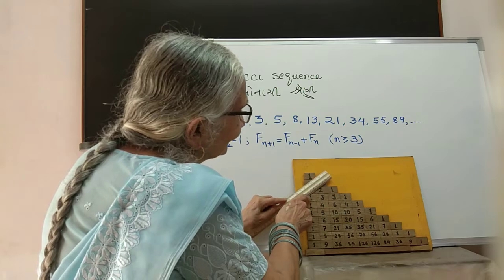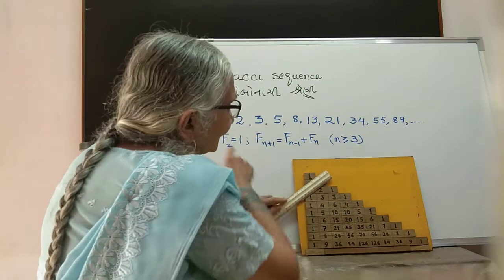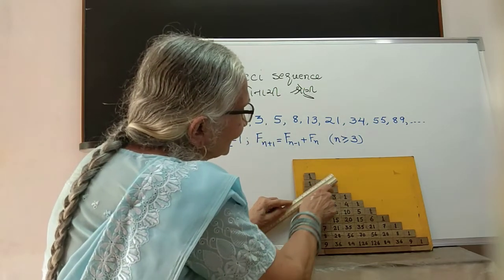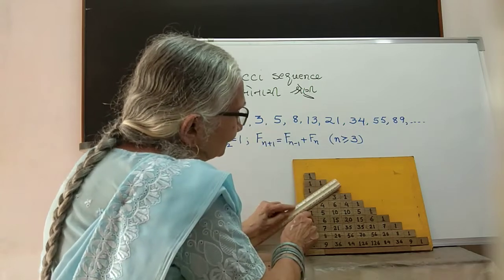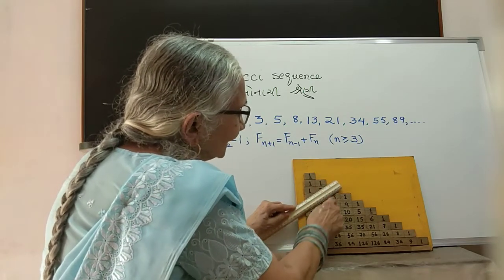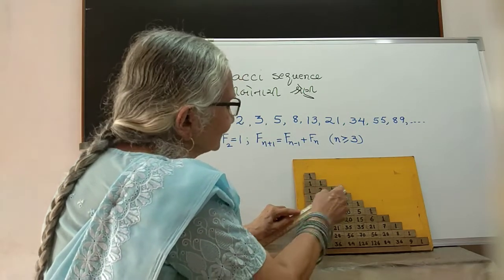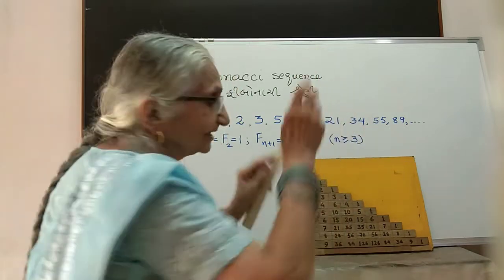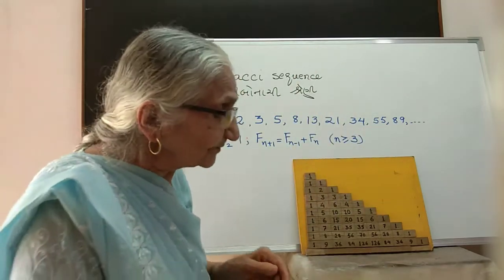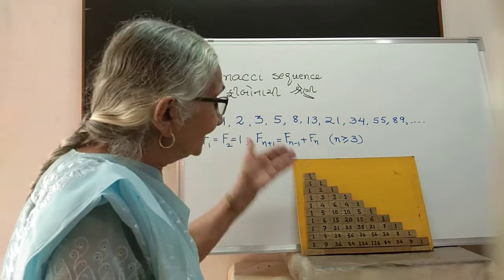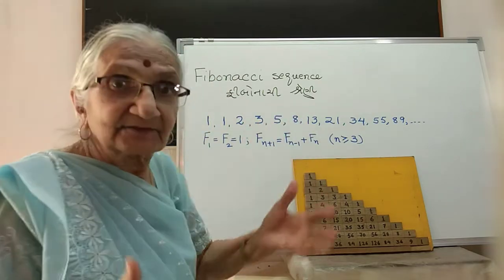First diagonal: 1. Second diagonal: 1. Third diagonal: 1 and 1 is 2. The next time: 1 and 2 is 3. 1, 3, 1 is 5. 1, 4, 3 is 8. And now you can guess this must be 13, this must be 21. You can check it for yourself. So in the Pascal's triangle, the difficulty numbers are very closely connected.